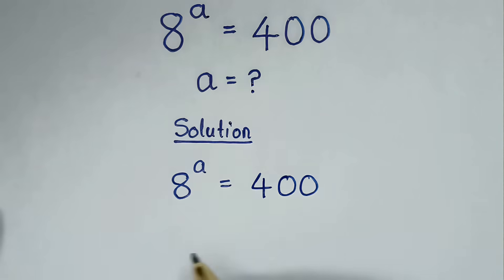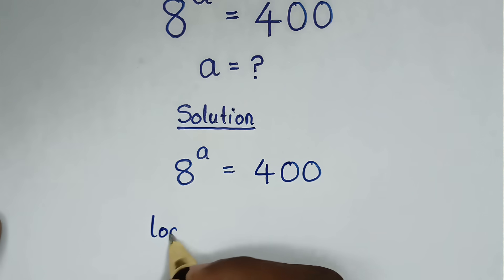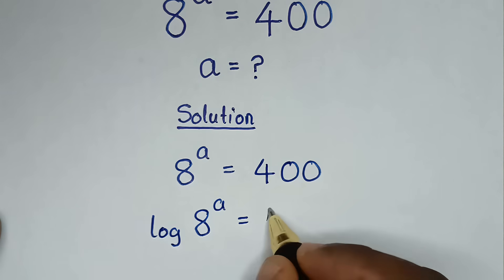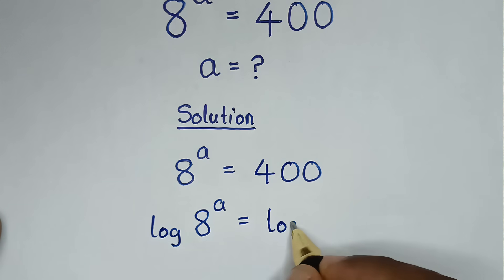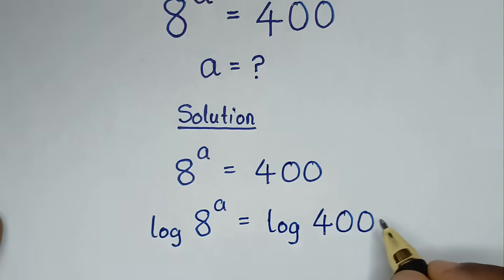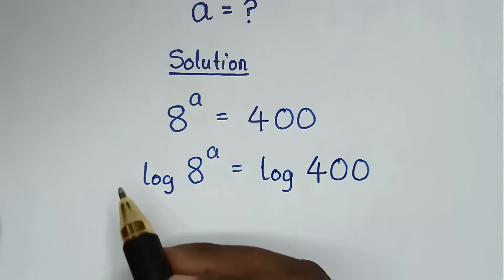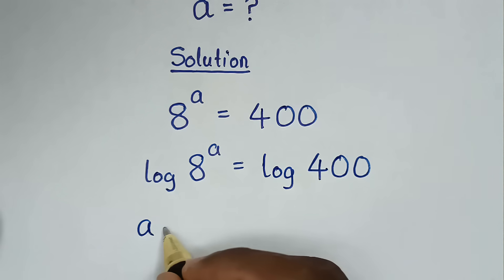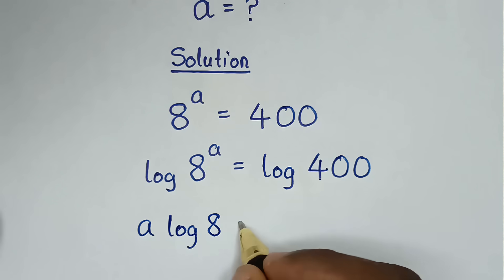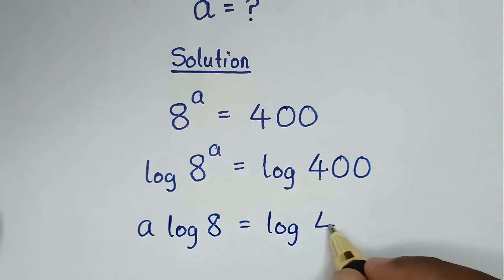In the first step, we will apply log in both sides. So it will be log of 8 power a is equal to log of 400. Then, this power of a will move to the base, so it will be a·log of 8 is equal to log of 400.